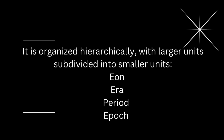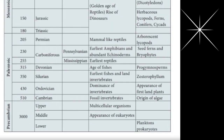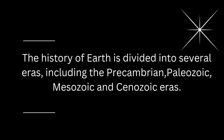The hierarchy consists of eon, era, period, and epoch. Here is the image showing the geological time scale with different eras, periods, and epochs in detail. The history of Earth is divided into several eras, including the Precambrian, Paleozoic, Mesozoic, and Cenozoic eras.